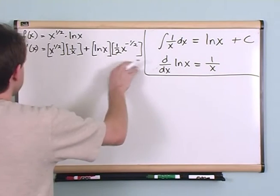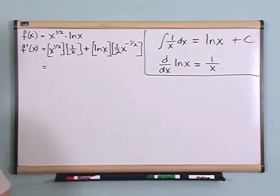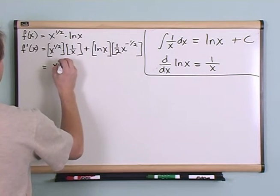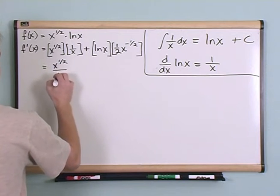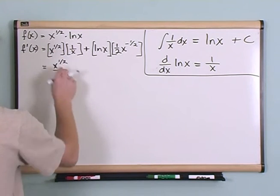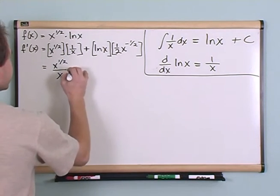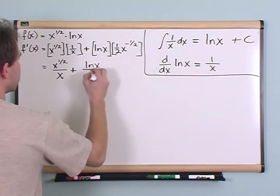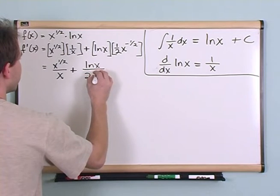So essentially this is the answer, and you just need to go ahead and simplify that. So what you're going to have is you're going to have x to the one-half over x, which would be this part here. You just multiply these two things together, plus natural log of x over here over 2 times x to the one-half.